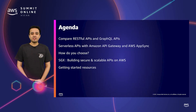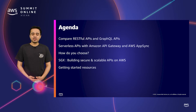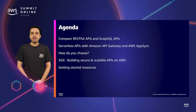In terms of agenda, we'll start by comparing RESTful APIs and GraphQL APIs, talking about pros and cons of each one of them. We will take some examples to deep dive on how each pattern works. Then we will look at implementing serverless REST and GraphQL APIs with Amazon API Gateway and AWS AppSync, respectively. We will then discuss how to pick between REST and GraphQL, and finally hear from SGX on their API implementation and patterns.